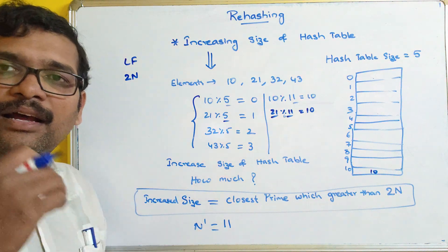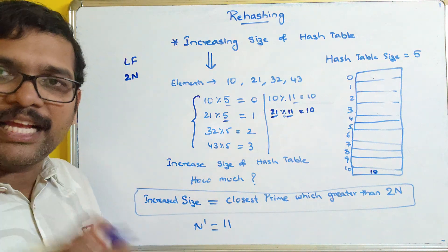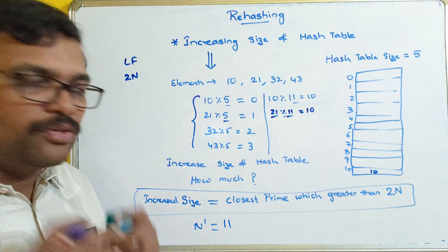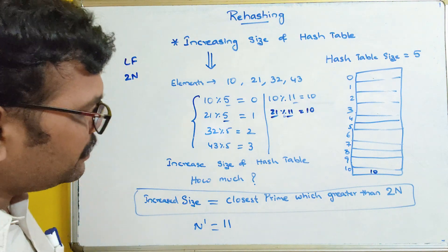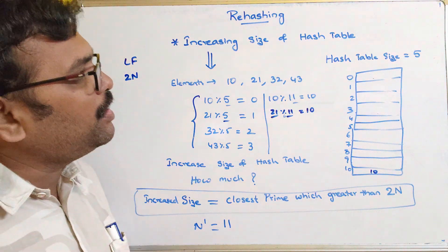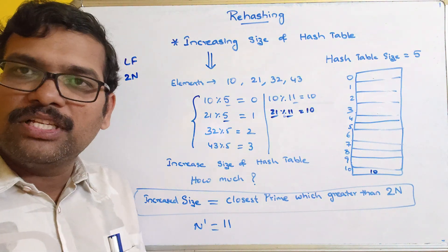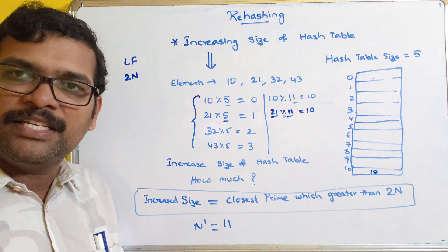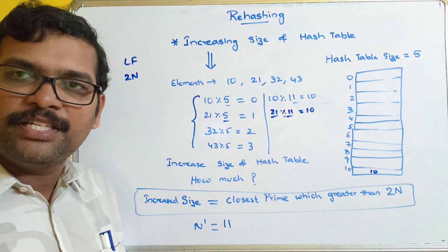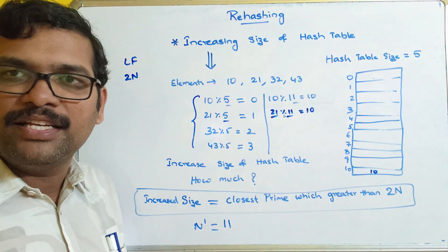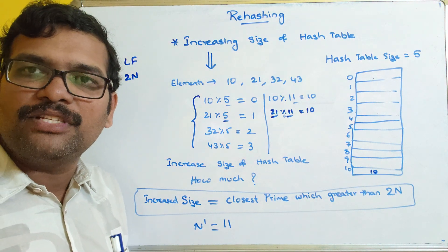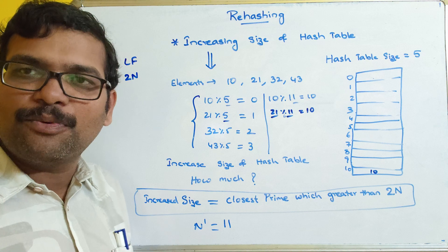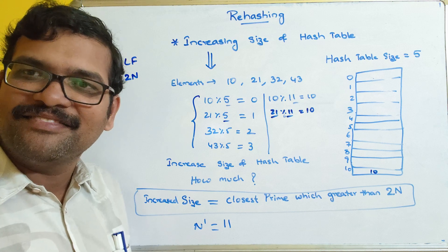So to summarize: when to increase depends on the load factor, and how much to increase is to the closest prime greater than 2n. These are the two important things to remember in rehashing — we are doing the same hash function after increasing the table size. I hope you understood. If you enjoyed this session, like and share it with your friends and don't forget to subscribe. Thanks for watching.